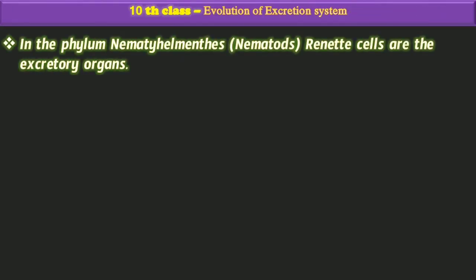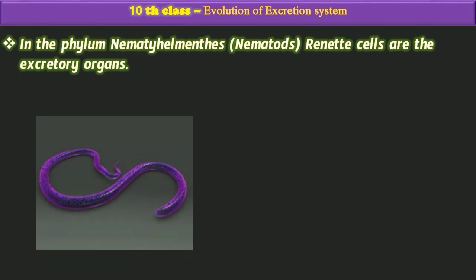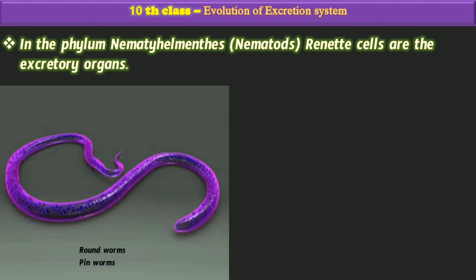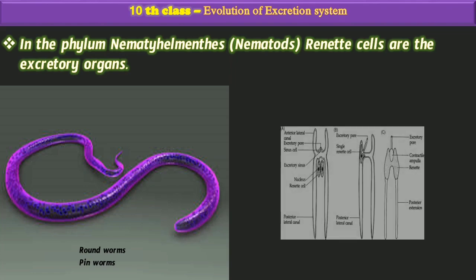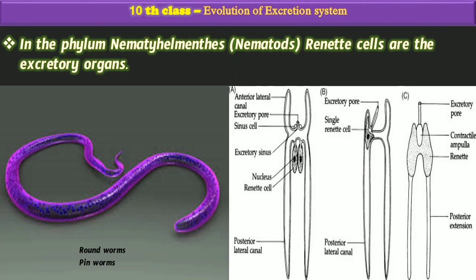In the phylum Nematoda, renette cells are the excretory organs. We can observe this kind of cells in roundworms, pinworms, etc. Almost all organisms in this phylum are parasites.